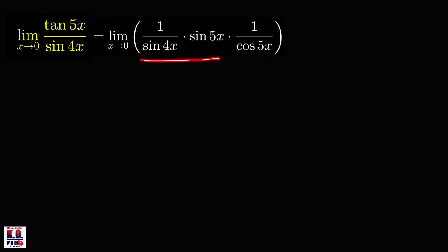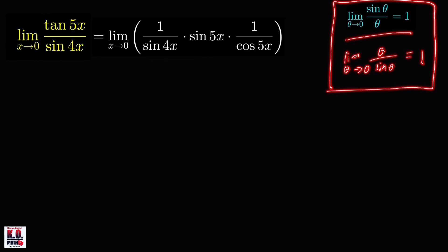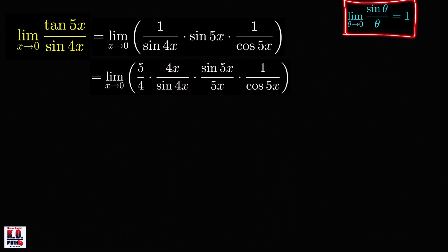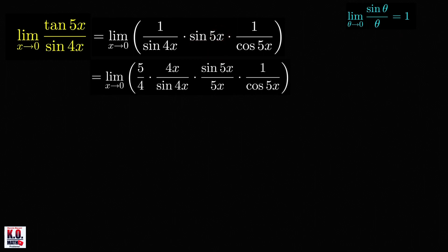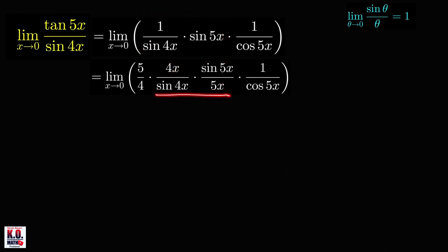To evaluate the limit of this product, we need to use the result that lim sin(θ)/θ = 1. From this result, we know that the limit of the reciprocal θ/sin(θ) is also equal to 1. So we multiply the numerator by 4x to get 4x over sin(4x), which is in the form θ/sin(θ) with θ = 4x. And for sin(5x) we divide by 5x to get sin(5x)/5x. When we take the product, we get a factor of 4 over 5, so we multiply by 5 over 4 to preserve equality with the original expression.